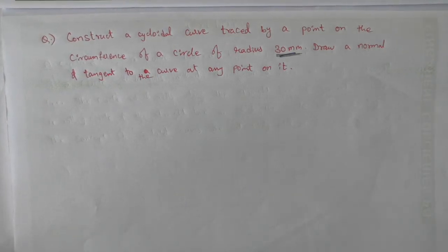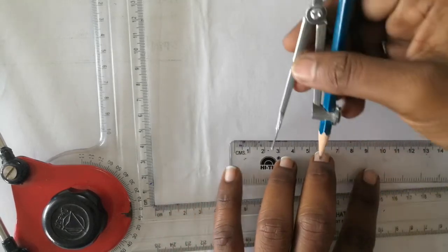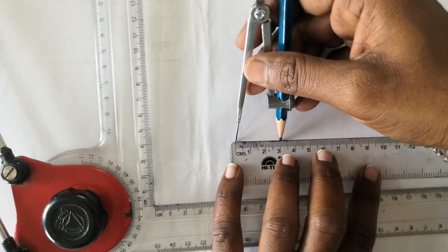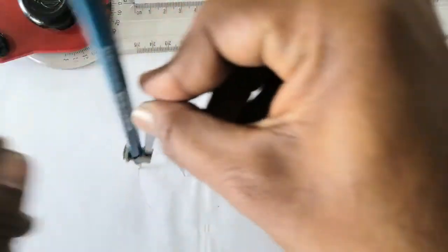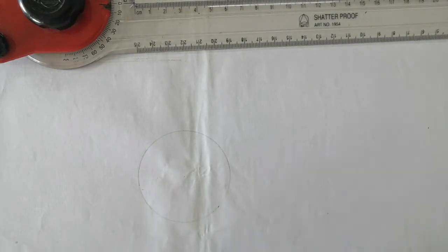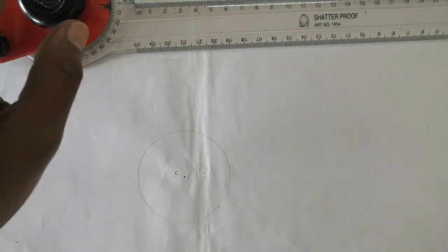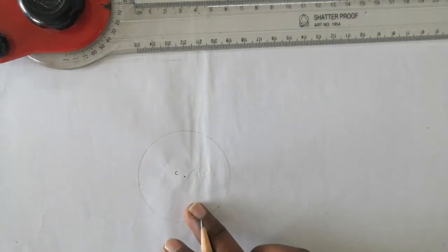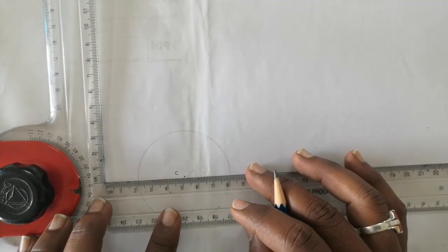The data required is only the radius of the circle, which is 30 mm. Take a compass, set it to 30 mm, and with a convenient center point, draw a circle of 30 mm radius. Mark the center point as C. Now divide the circle into 12 equal parts.